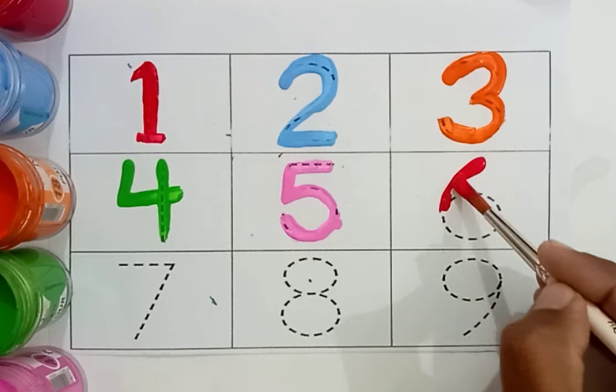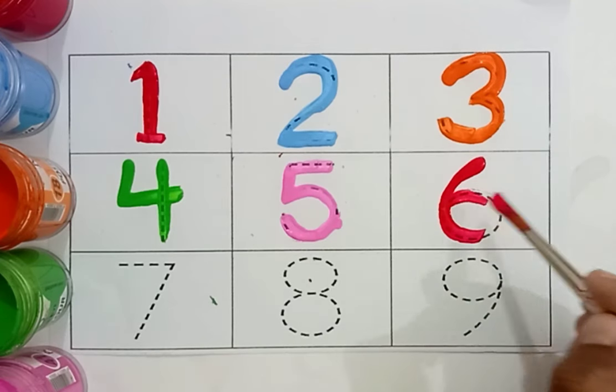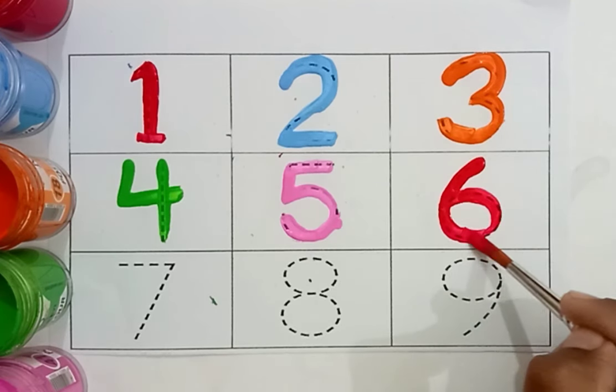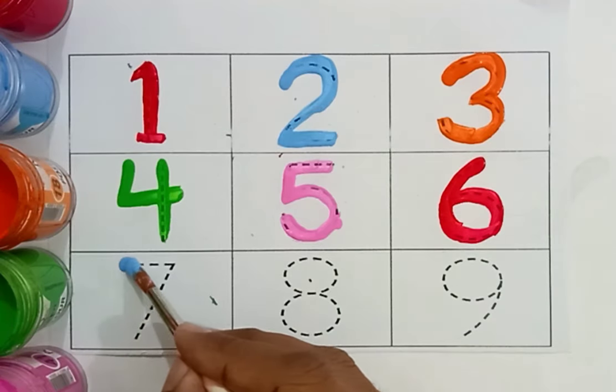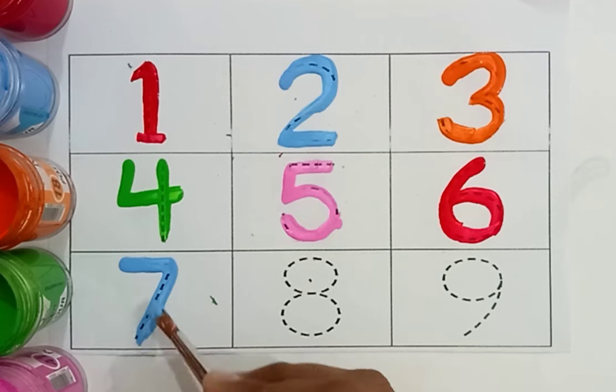Red color. Six. Which number is this? Six. Blue color. Seven. Which number is this? Seven.